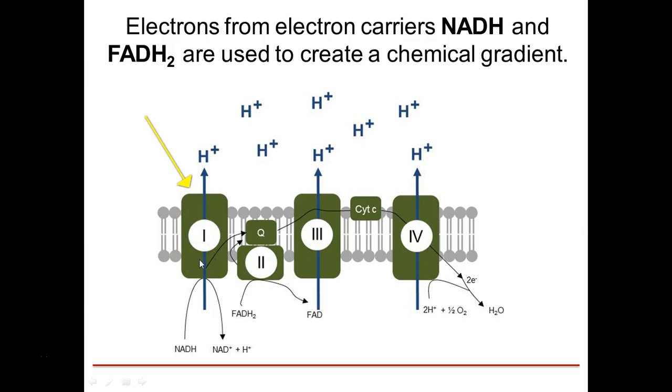Complex 1, represented here, establishes the hydrogen ion gradient by pumping four hydrogen ions across the membrane from the matrix into the intermembrane space. It does this by using the energy from NADH, which is an electron carrier.